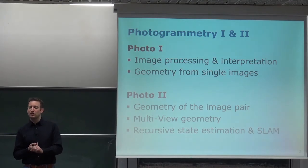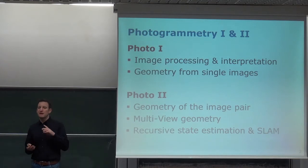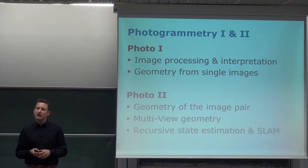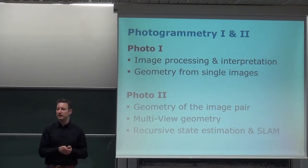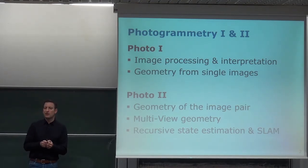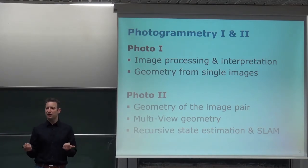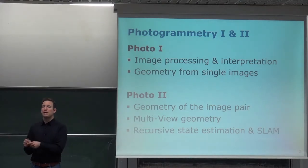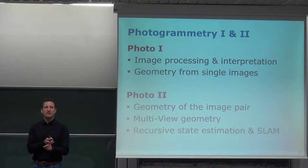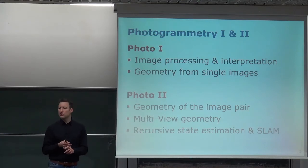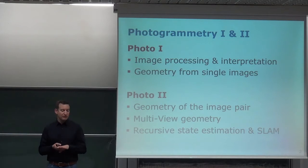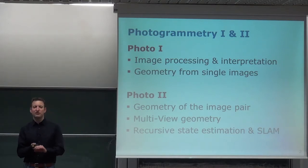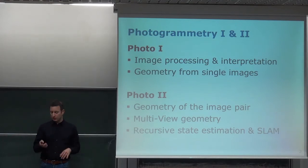Whereas in Photogrammetry 1 we mainly looked into image processing or image interpretation tasks — things like classification, dimensionality reduction, segmentation, and the geometry of single images — in Photogrammetry 2 we looked into more than one camera image. We started with the geometry for the camera pair, either a physical stereo camera or multiple images taken from different locations, asking what we can say about camera locations, the scene, and how this generalizes to N camera images. We also incorporated information about the motion of the sensor.